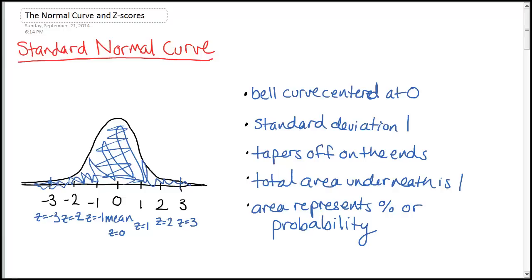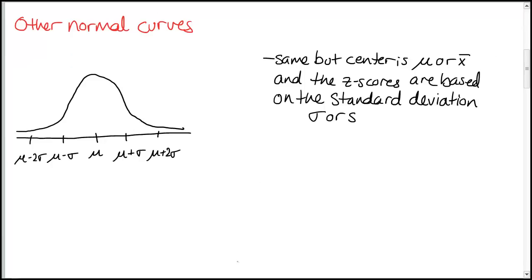In this video we're going to look at how to find that area or percentage. In the next video we'll look at some applications. We just looked at the standard normal curve. Generally, our normal curves are not centered at zero — they're centered around the mean of our data. So whatever that average value is, that's the center. Imagine if you had test scores: the average on the test would be right in the center.